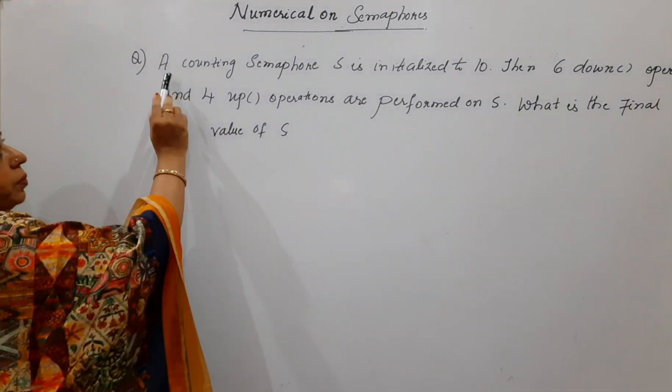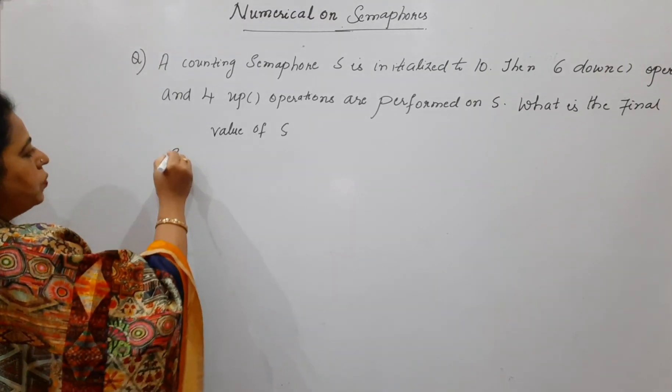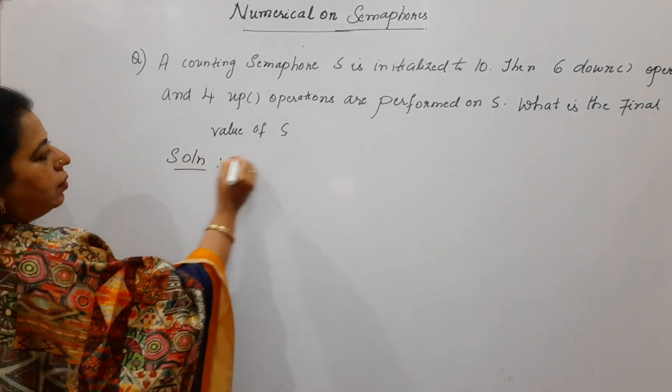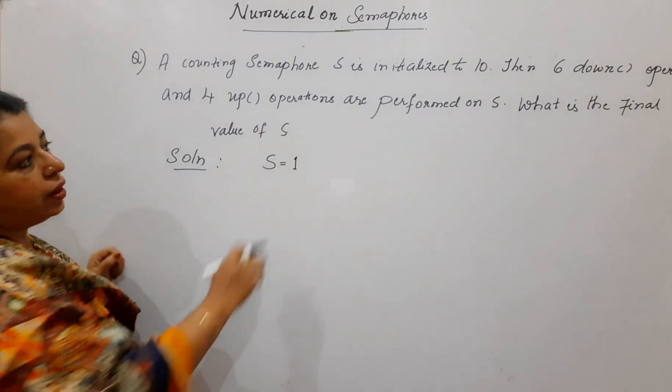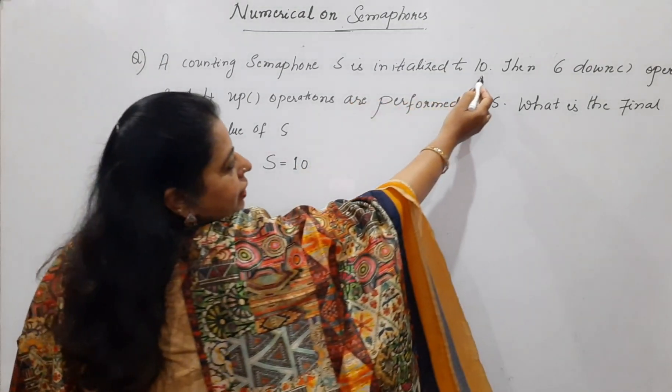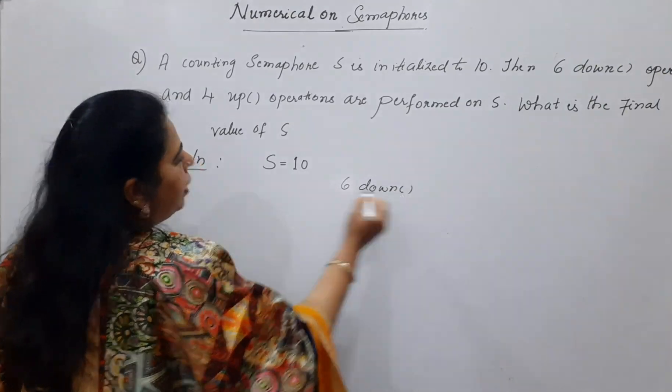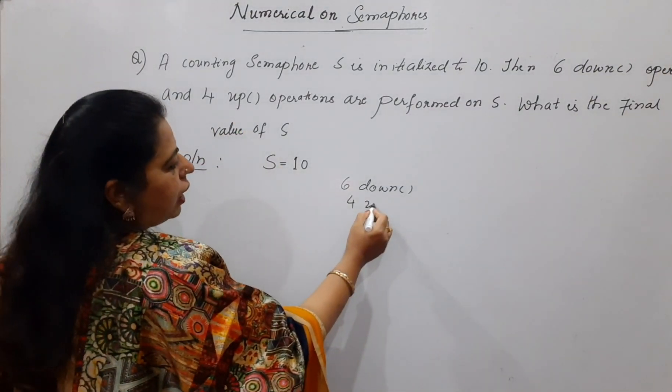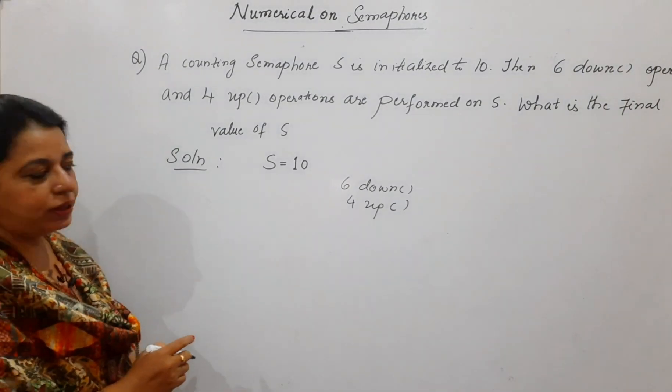The numerical statement says that counting semaphore S is initialized to 10. Look here, it is initialized to 10. Then 6 down operations and 4 up operations are performed on the semaphore S. What is the final value of S?